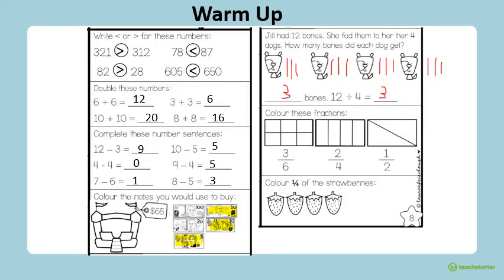Okay, we're going to colour in these fractions. We've got a rectangle that is divided into sixths, six equal pieces, and it wants us to colour in three of those equal pieces, so 3 sixths. Next one wants us to colour in two quarters. So our rectangle is divided into quarters, four equal pieces, and we're going to colour in two of those quarters. And the last one, our rectangle is divided into halves, and we're going to colour in one half. Down the bottom, colour one quarter of the strawberries. So there's four strawberries, one quarter would be one strawberry.